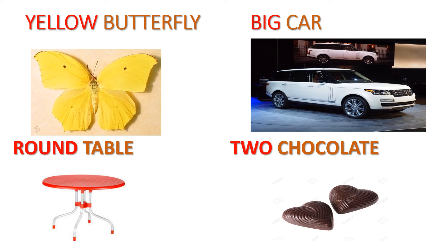Yellow, big, round, and two — size, color, shape, and numbers. These words are adjectives.